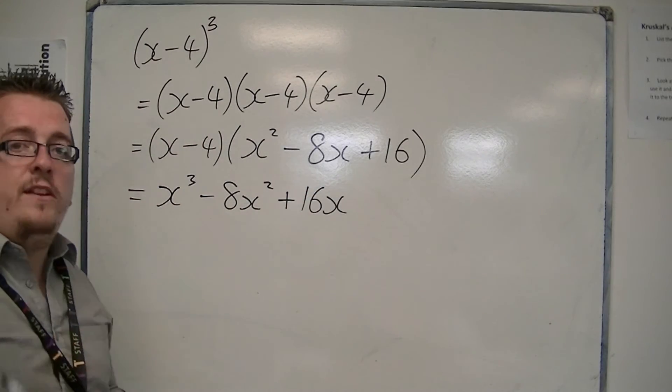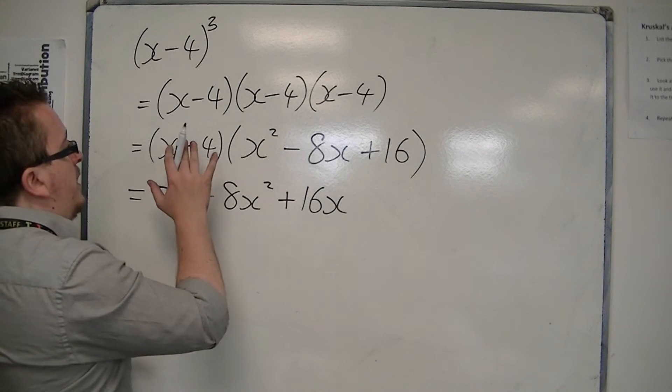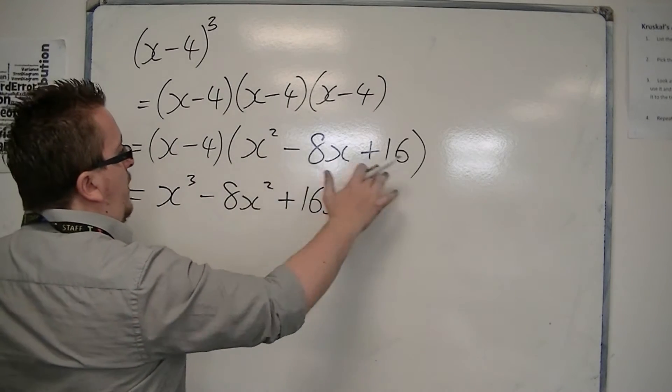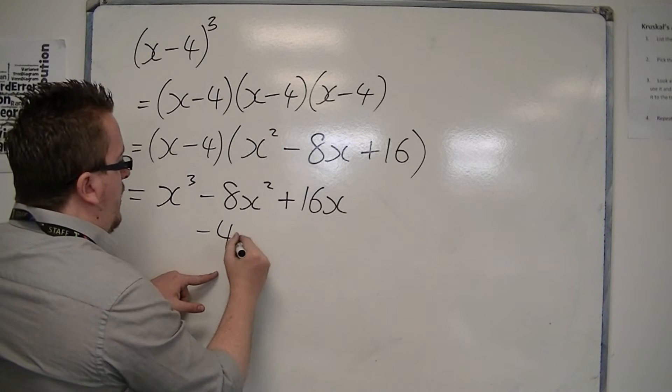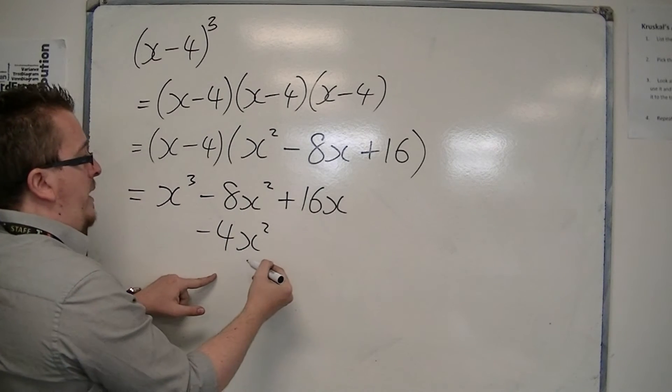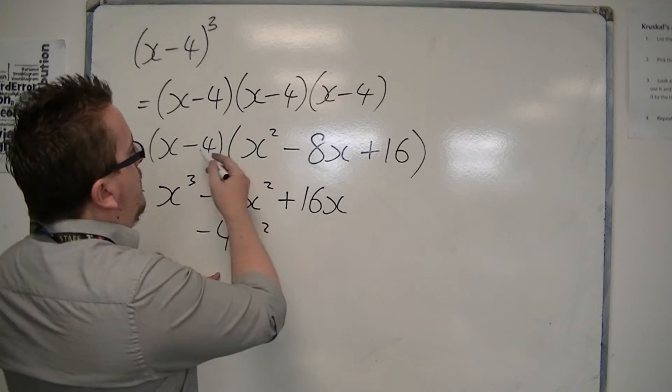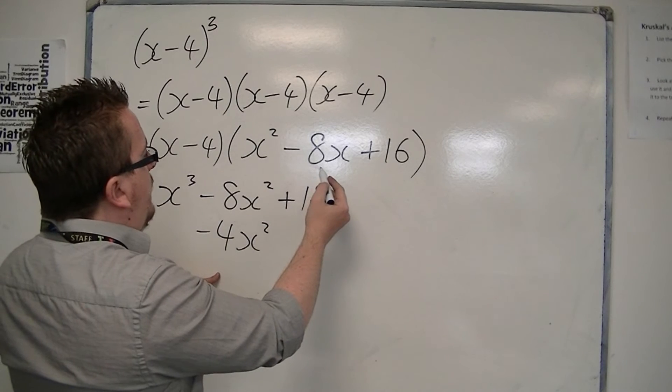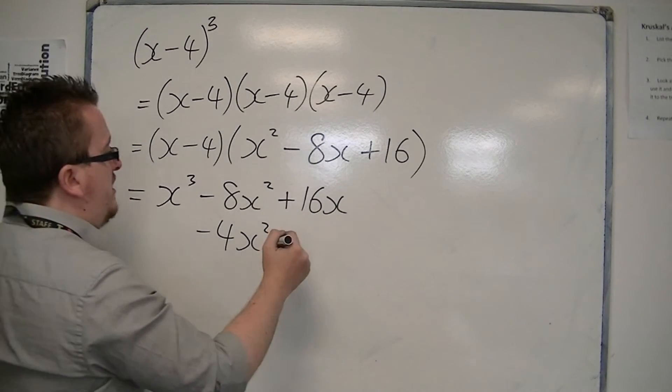Now notice how I then write the next line. I'm going to do minus 4 times each of these three terms. Minus 4 times x squared is minus 4x squared. I write it under the x squareds here. Minus 4 times minus 8x is plus 32x.